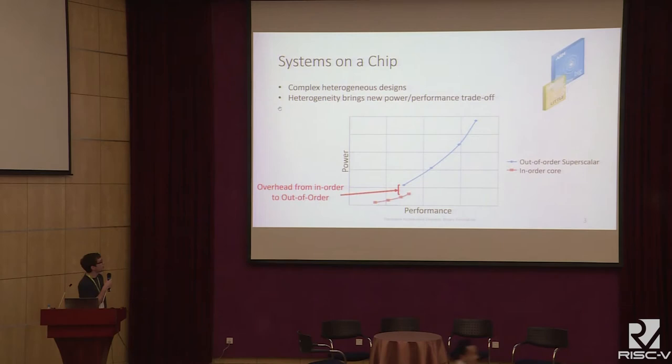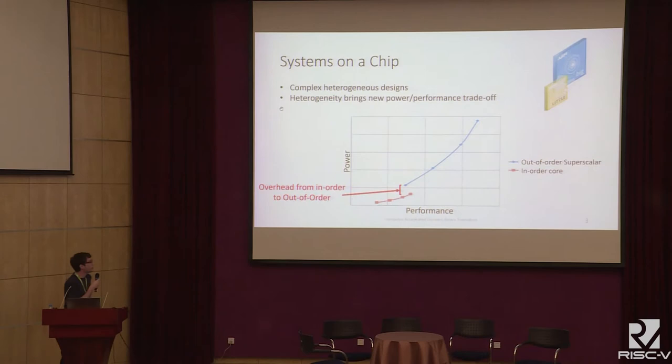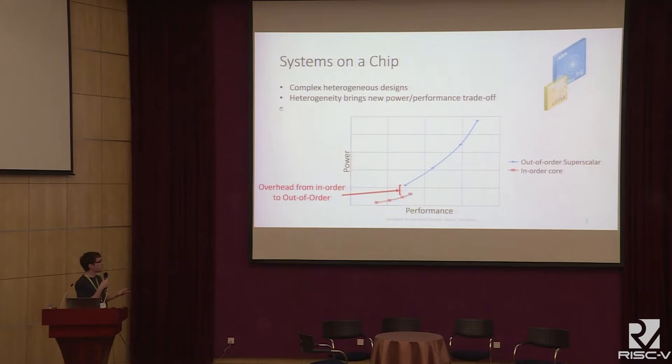The best example of that is the big.LITTLE architecture from ARM, where they have two different types of cores: one out-of-order superscalar processor, which is here to deliver high performances, and the in-order core, which is here for low-power execution.